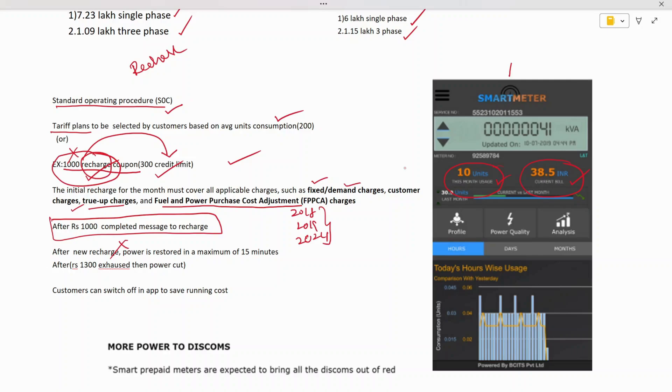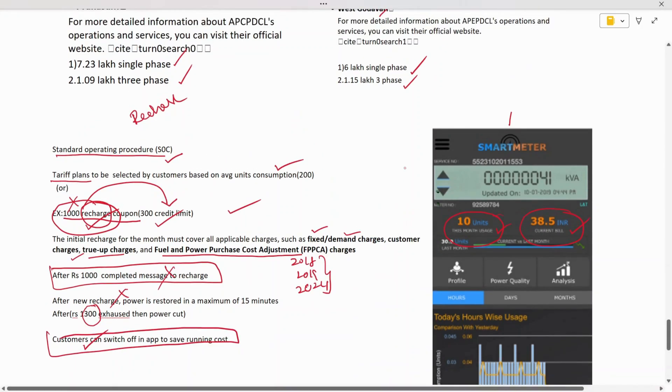As soon as the recharge is completed, the power doesn't get interrupted and you have a reserve fund of 300 rupees. This reserve fund of 300 rupees is provided by AP SPDCL, and you can use this reserve fund until you recharge.